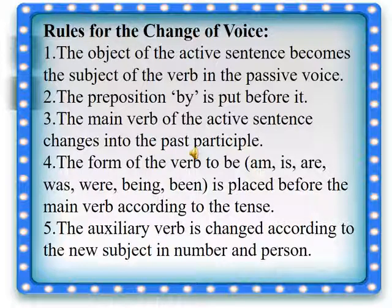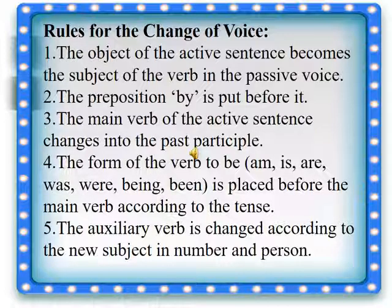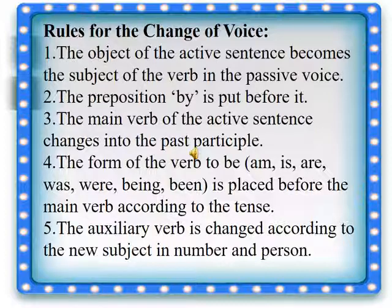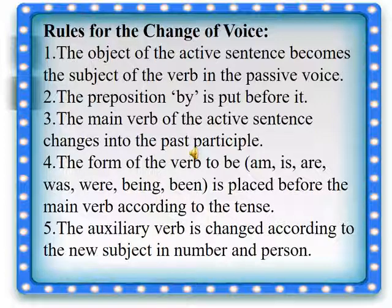Now there are some rules for the change of voice. First, the object of the active sentence becomes the subject in the passive voice, and the preposition 'by' is put before it. The main verb of the active sentence changes into the past participle. The form of the verb 'to be' — am, is, are, was, were, being, been — is placed before the main verb according to the tense. And last, the auxiliary verb is changed according to the new subject in number and person.